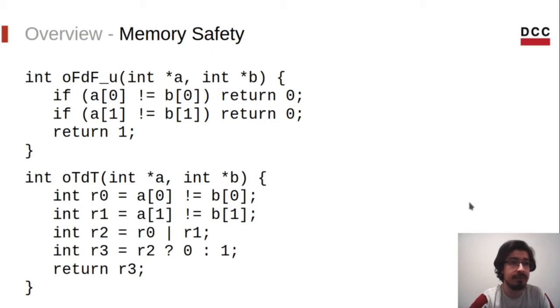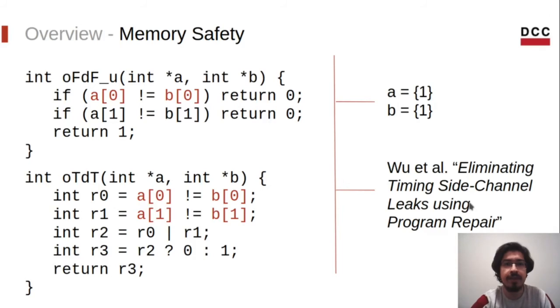But now we have a problem. Recall that I said that the transformation should not introduce any bugs - it should be memory safe. What happens if there is a call to those functions with arrays of size 1? In the first case, the second access would not be executed due to the first return statement. But for the transformed function, the second access would still be performed. But A1 and B1 are not valid memory cells. Thus, we introduced an out-of-bounds access that would not occur at all in the original version. This is basically what was proposed by Wu et al. in the paper called Eliminating Timing Side Channel Leaks Using Program Repair. What we want here is to improve their work by not introducing any kind of bugs.